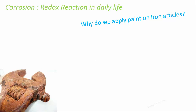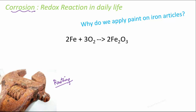Now let's look at examples of redox reactions from day-to-day life. One such example is corrosion. The best example is rusting of iron — a reddish-brown layer appears on the surface of iron articles. That layer is nothing but oxide of iron. When iron articles are exposed to air or moisture, they get oxidized: iron combines with oxygen to form iron oxide, Fe2O3, which is rust.